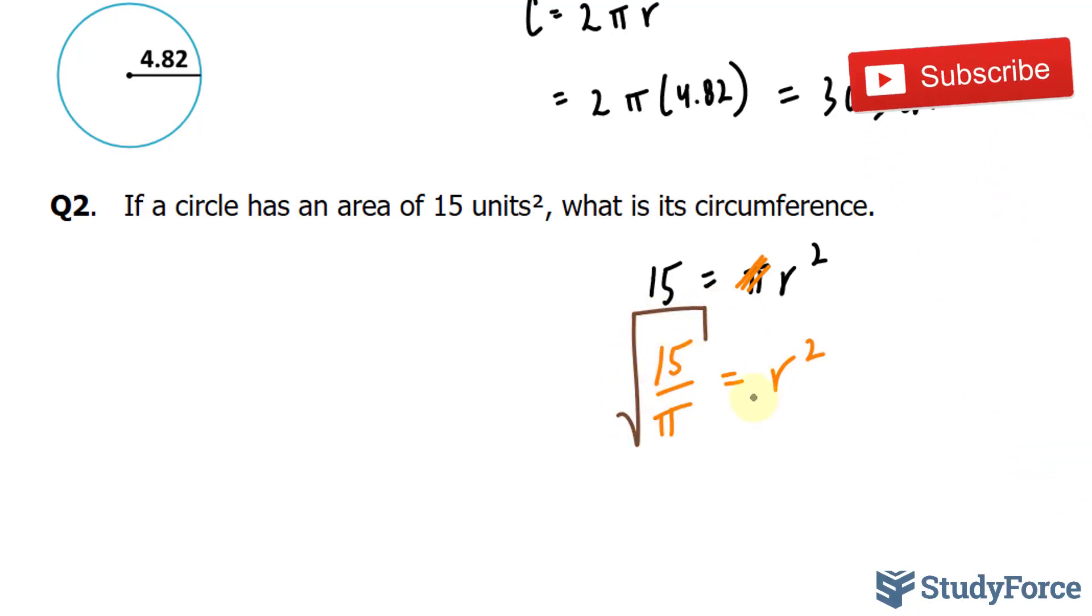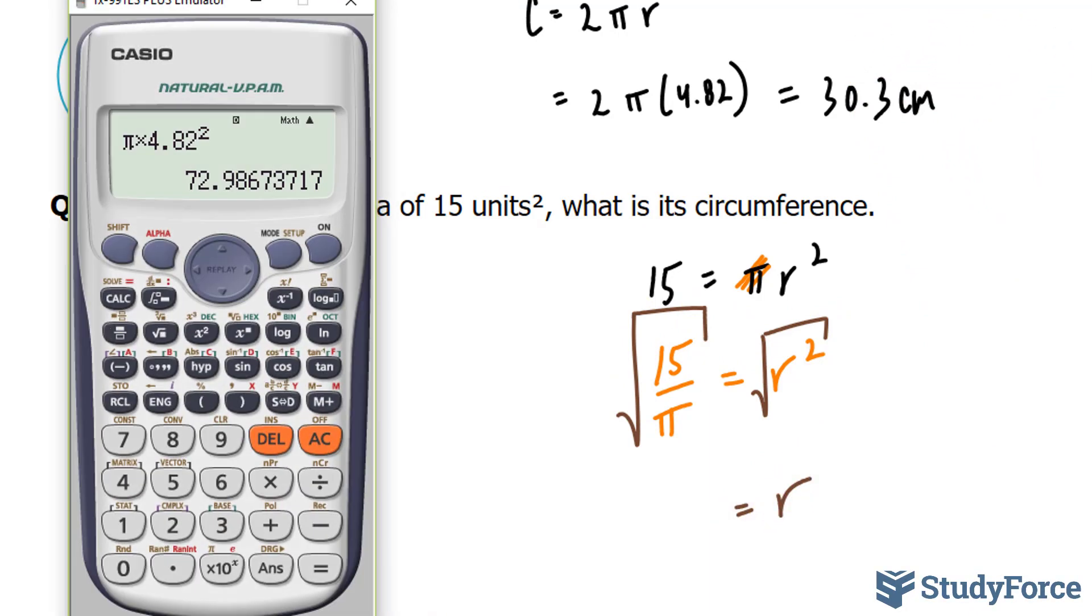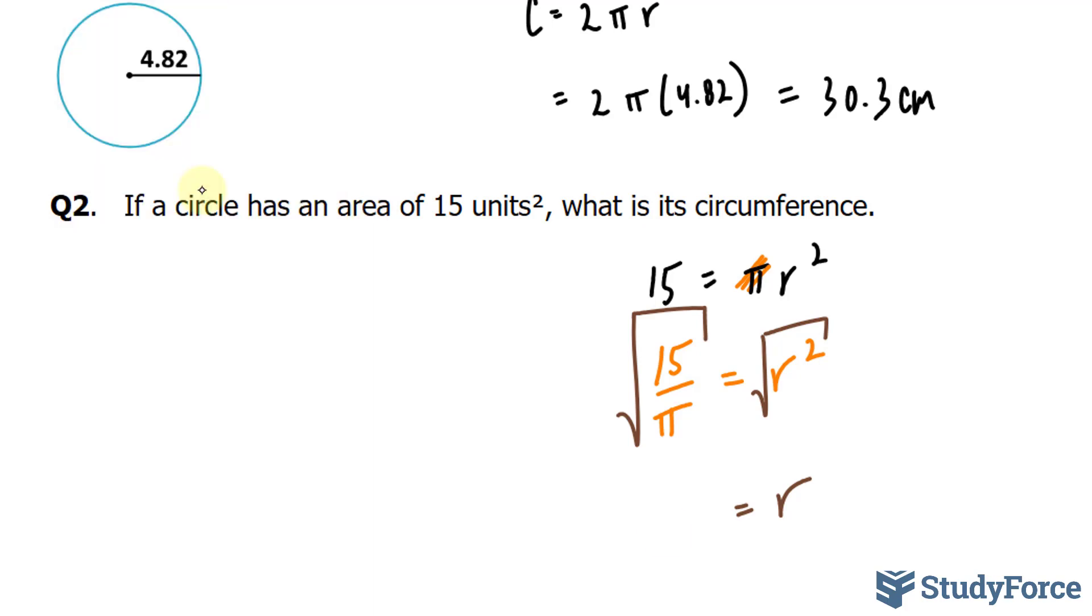If I square root the left side and the right side, I'll end up with r only on the right side, and I can use my calculator to find out what r is. So I'll write down the square root of 15 divided by pi, and we get 2.18. And if you want this to two digits, then you can stop writing after this one. It's followed by an 8, so we can write down 2.2 as our radius.